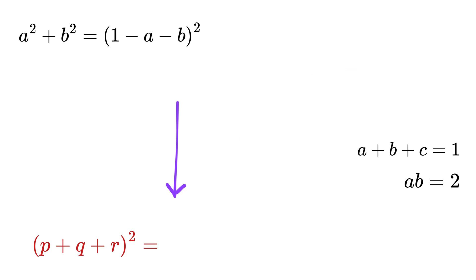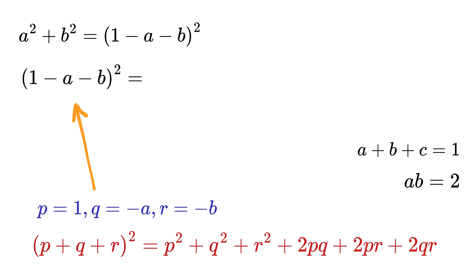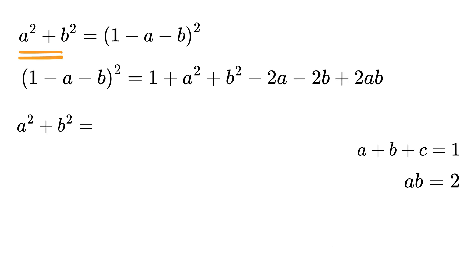Now this is the identity for P plus Q plus R whole squared. Substitute P as 1, Q as minus A, and R as minus B to get 1 minus A minus B whole squared as 1 plus A squared plus B squared minus 2A minus 2B plus 2AB. So we get A squared plus B squared equals this whole thing.